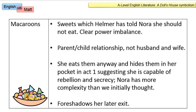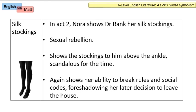Another form of rebellion we see from Nora is through the silk stockings in Act 2. She shows Dr. Rank her silk stockings, and this is a form of sexual rebellion because there is a degree of chemistry between these two characters. At the time, it would have been scandalous to show another man other than your husband stockings above the ankle — and she's showing Dr. Rank the whole lower leg. Just like with the macaroons, it shows her ability to break rules and social codes, particularly those expected of women and married mothers, and foreshadows her later decision to leave the house.